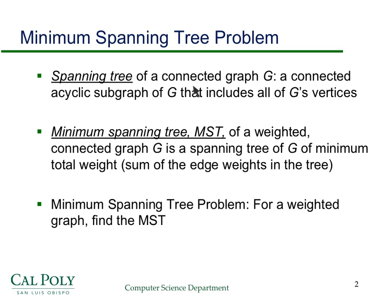A spanning tree for a graph is an acyclic subgraph of G that includes all of G's vertices — basically, you connect all the vertices with a minimal number of edges. A minimum spanning tree of a weighted connected graph is a spanning tree of minimum total weight, where total weight is the sum of all edge weights in the tree. The minimum spanning tree problem is: given a weighted graph, find the minimum spanning tree.